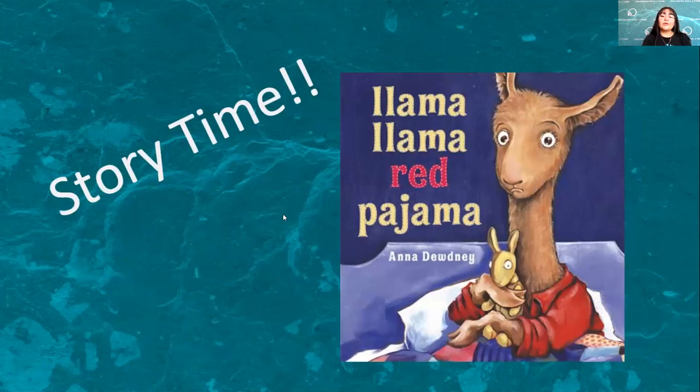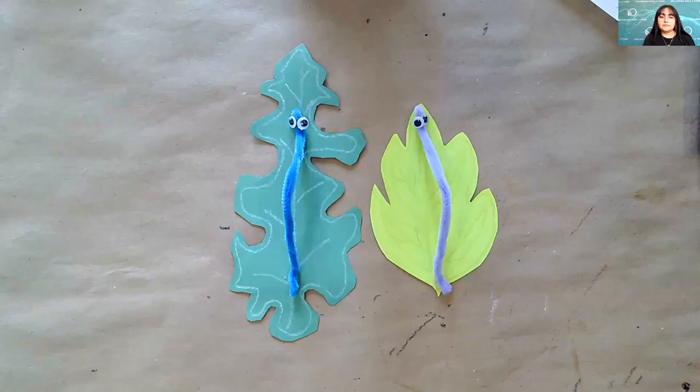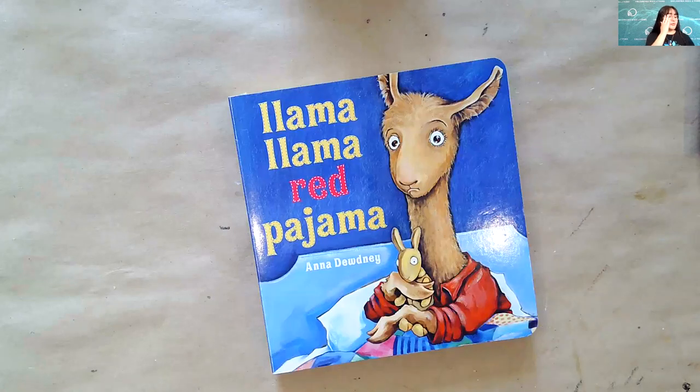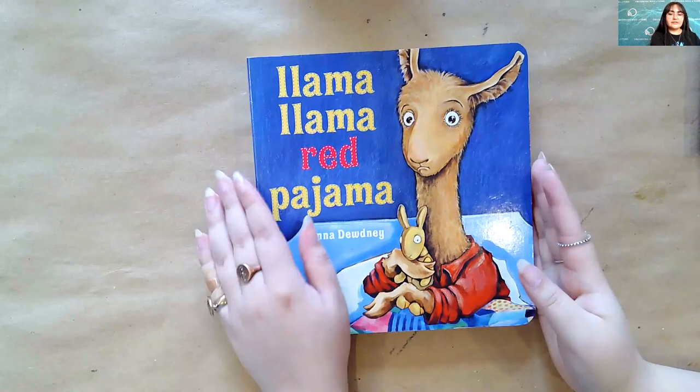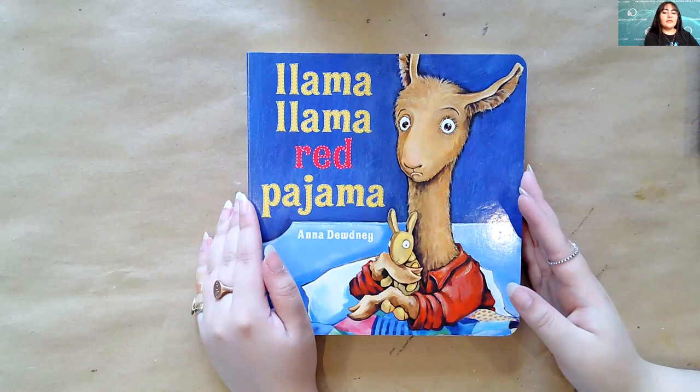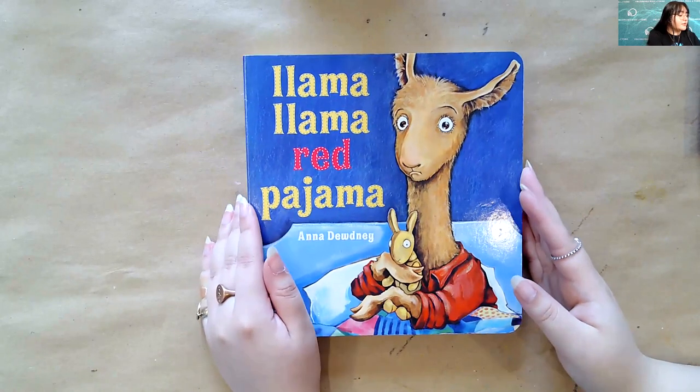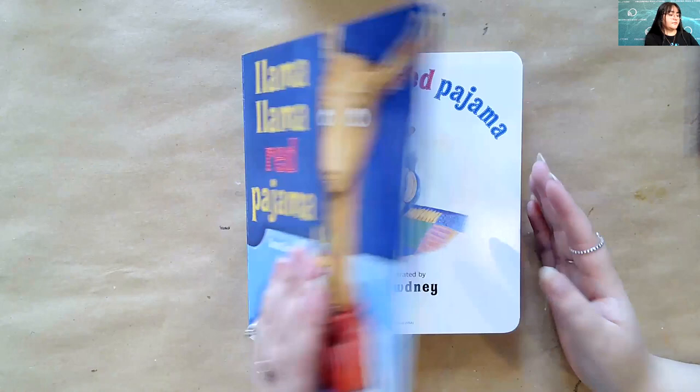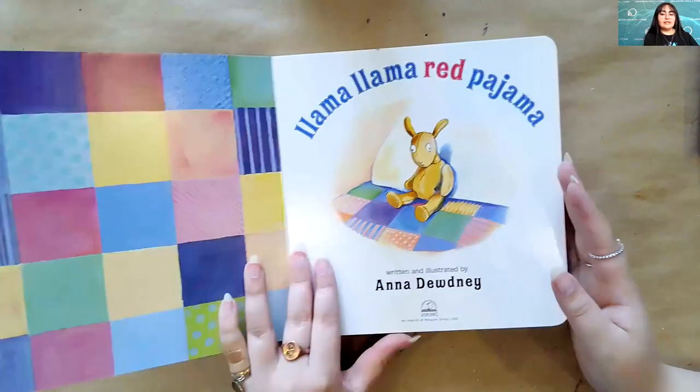So for today's story time, we'll be reading Llama Llama Red Pajama, inspired by today's craft, a little bit inspired about Rie Drummond herself of maybe what type of farm animals you might find while on her ranch. So let me go ahead and switch my screen so you can read the book with me. There we go. It's a pretty small book, pretty small compared to other books. But this is the book, Llama Llama Red Pajama by Anna Dudney. So let's go ahead and get started.